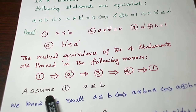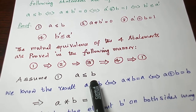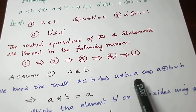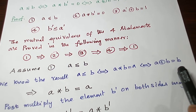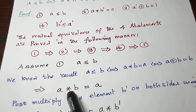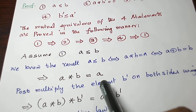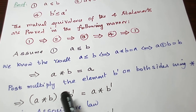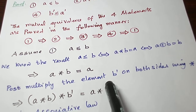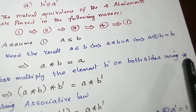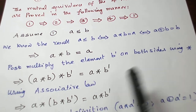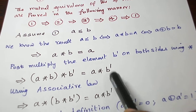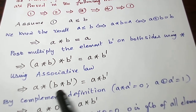Let us start. First, assume the first statement — A is related to B, meaning A is less than or equal to B. We have a result: suppose two elements are comparable, star gives the smaller among them and plus gives the larger among them. So A star B gives the smaller, which is A, and so we have A star B equal to A. Now let us post-multiply the element B dash on both sides using the star (meet) operation.